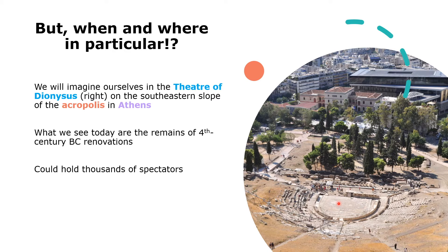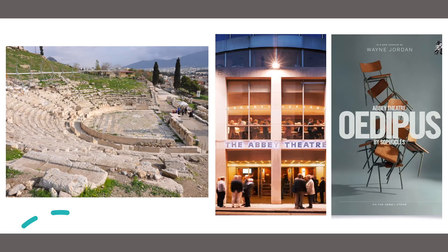A few things to take away from this image. First, you are outside — a completely different atmosphere to what we might think of for a theater today, basking in the sunshine and possibly great heat. Second, there is a huge audience: thousands of spectators filling tiered seating, which is again very different from what we expect in the modern theater.